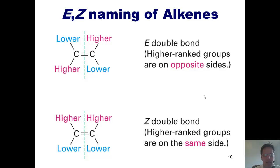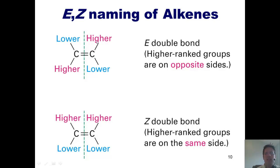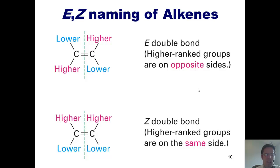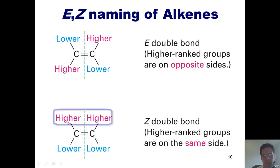Here's how the E/Z convention works. You draw a dashed line down the middle of your carbon-carbon double bond, then look to the left and decide which substituent is higher priority — put a checkmark next to it. Look to the right and decide which is higher priority — put a checkmark next to it. If the two higher-priority groups are on opposite sides of each other, it is called an E double bond. If they're on the same side, it's called a Z double bond. An easy way to remember: Z means same side, E means opposite sides.